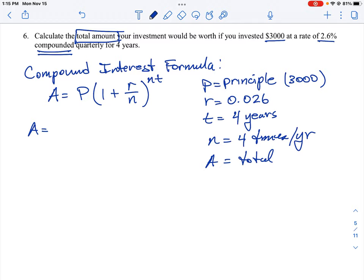So A is equal to P, which is 3000, and then the rest of this formula is one plus the interest rate, which is 0.026, divided by four, and then we raise that to the n times t power. So n and t both happen to be four in this case, so we're going to raise it to the four times four power, which is 16.